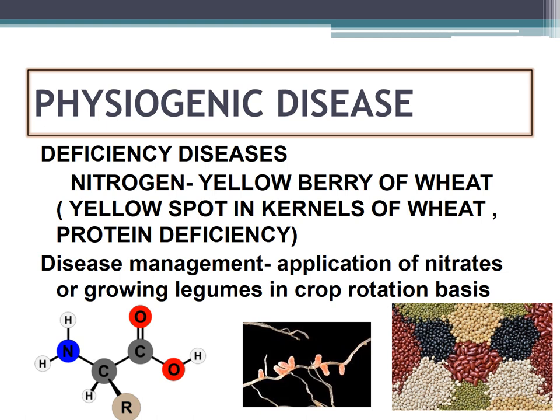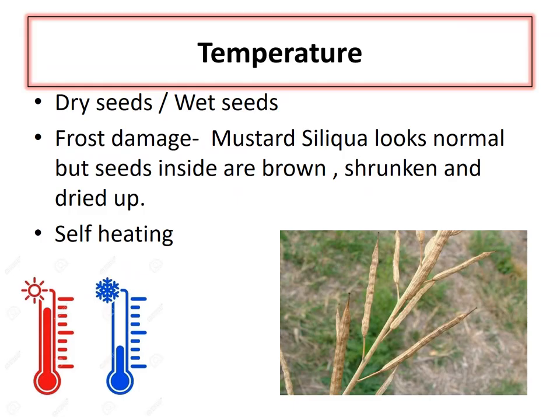Crop rotation by growing leguminous crops or pulses such as kidney beans and green gram can also help, as these consist of root nodule bacteria which assist in fixing nitrogen. Temperature is an important influencing factor on the predisposition of seeds towards pathogen-caused disease. Dry seeds usually withstand extremely low temperatures, but wet seeds get killed below zero degrees, reducing or destroying seed viability and leading to frost damage.